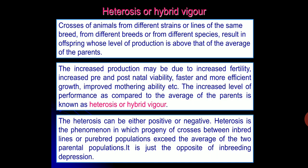Heterosis can be either positive or negative. For example, in case of AFC — Age at First Calving — the desirable direction is negative; if AFC is reducing, it will be better. So in that case heterosis may be negative. Heterosis is the phenomenon in which progeny of crosses between inbred lines or pure breed populations exceeds the average of the two parental populations.